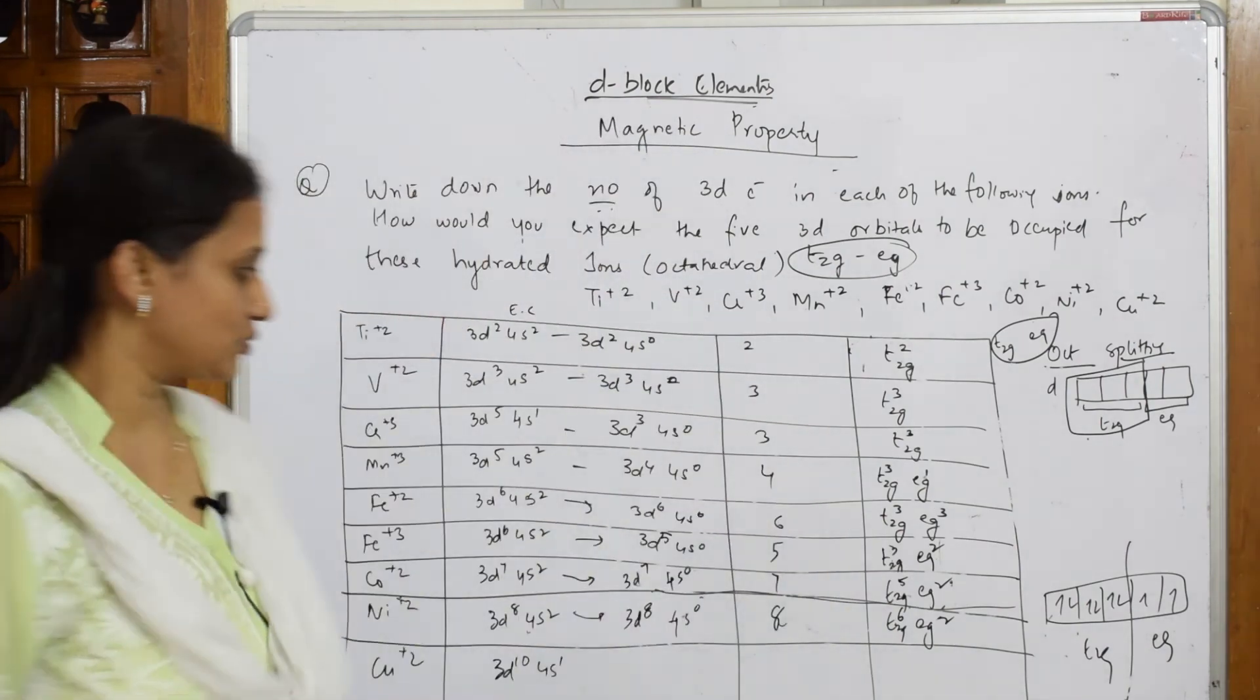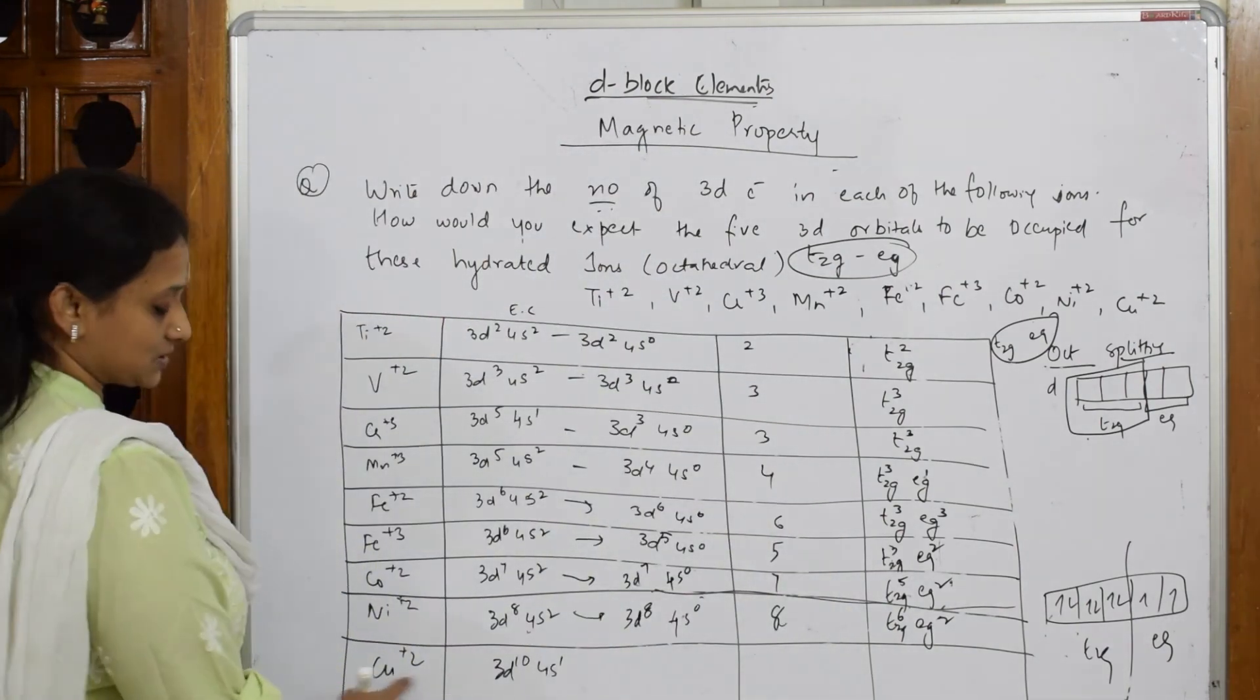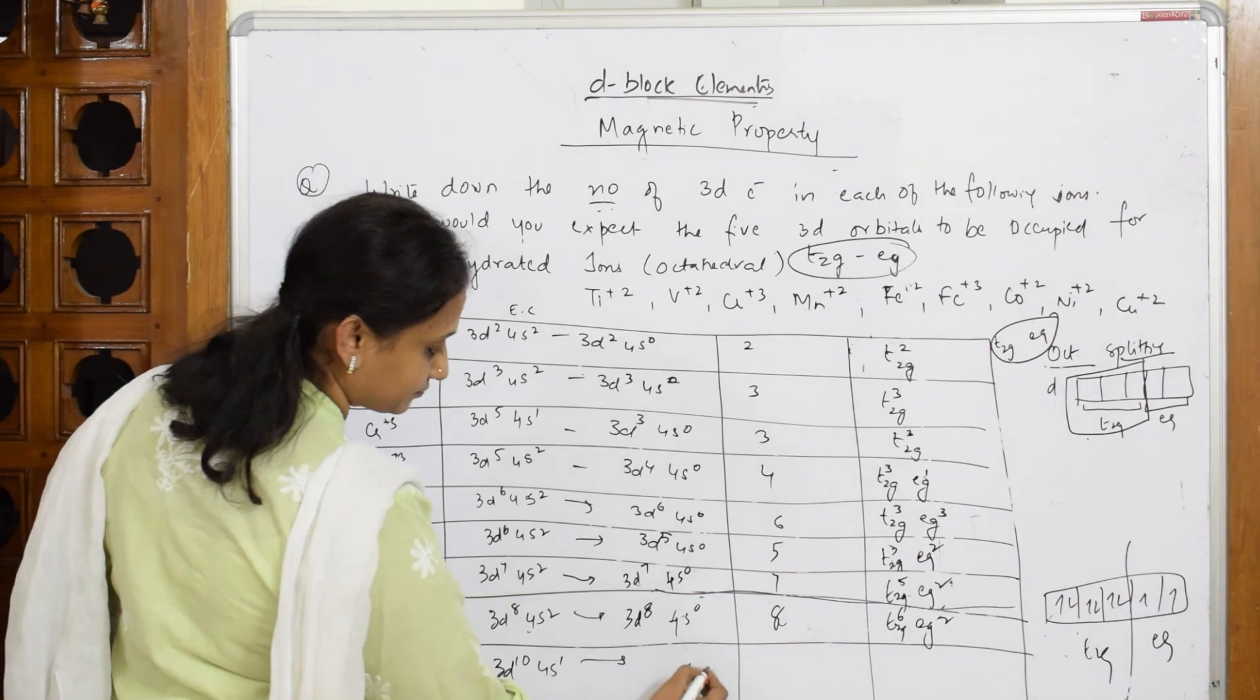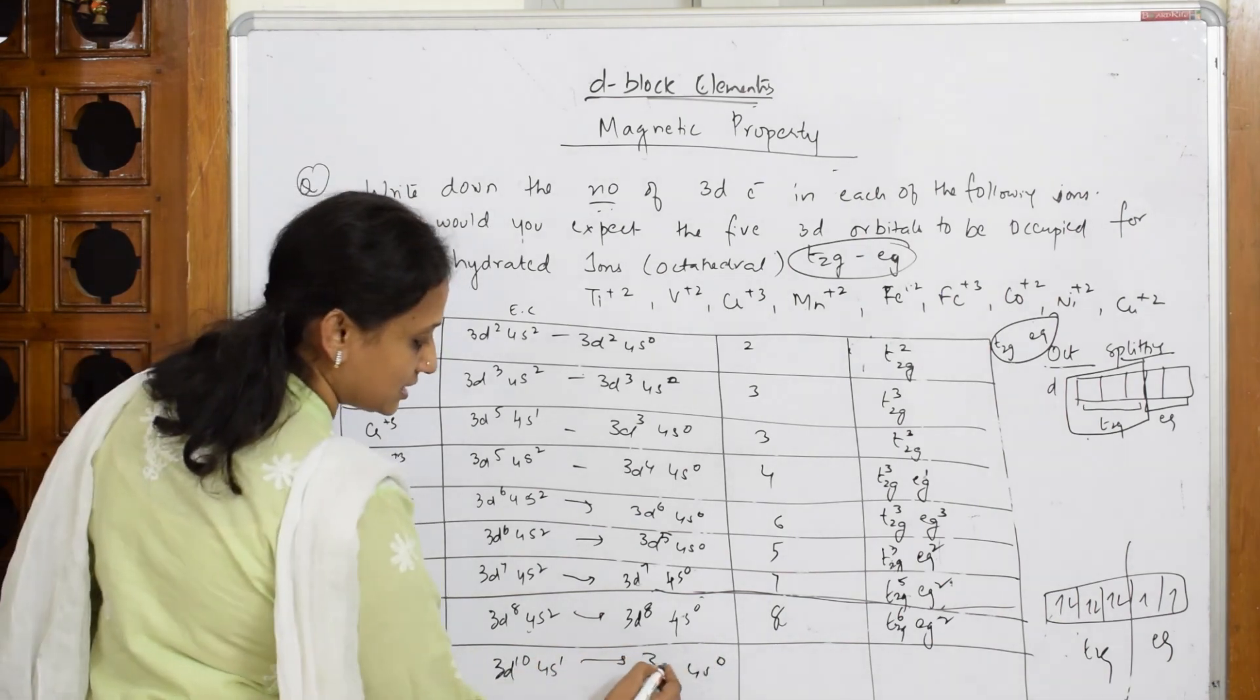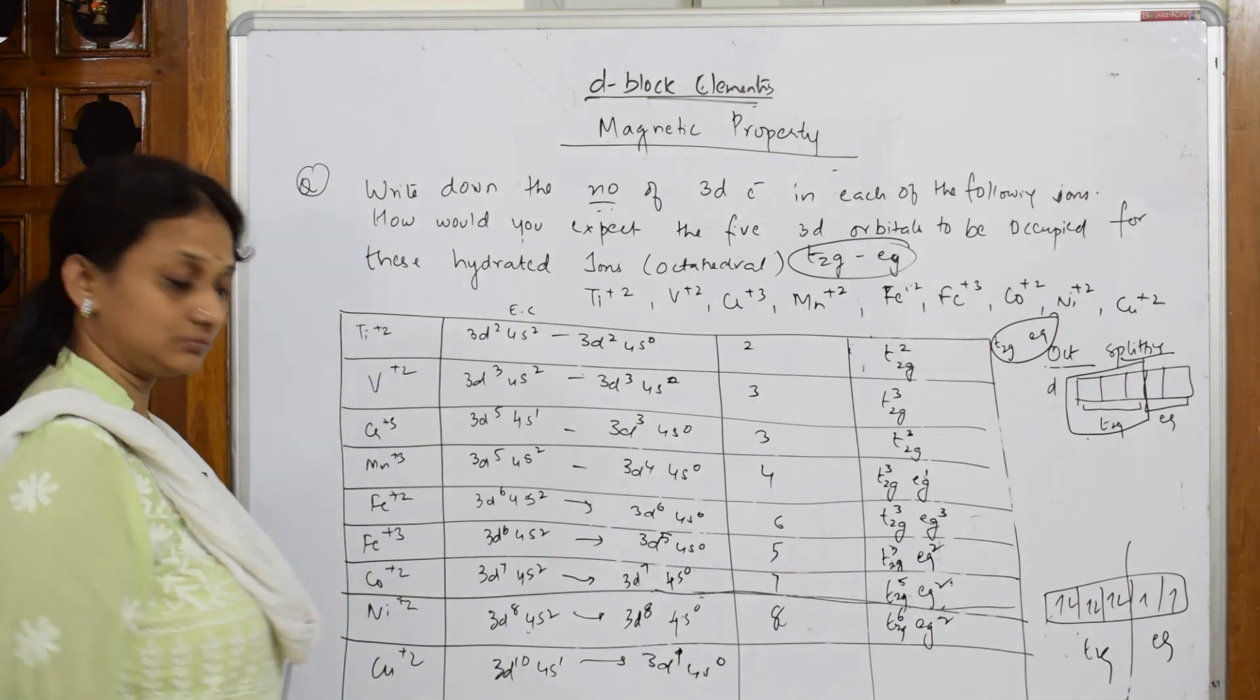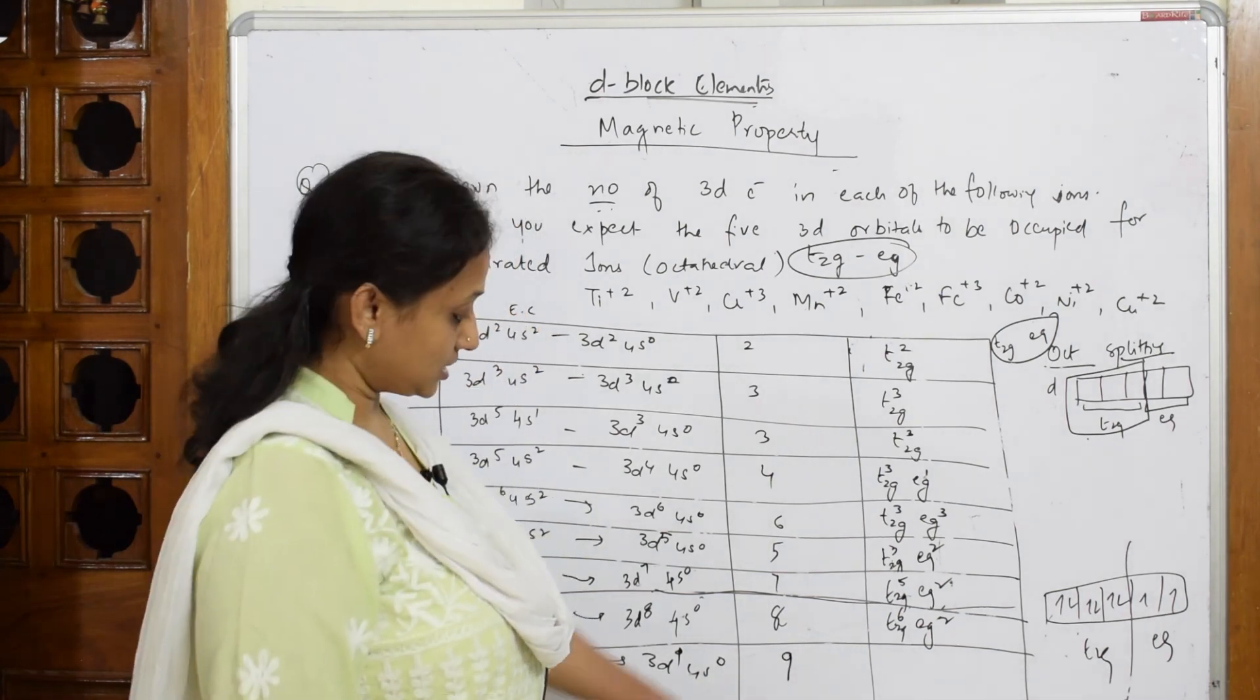Copper plus 2. So you have to remove one electron from here. This becomes 3D⁹. Number of unpaired electrons is 9. So how will I fill this?